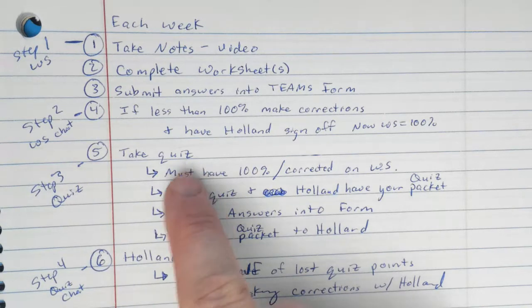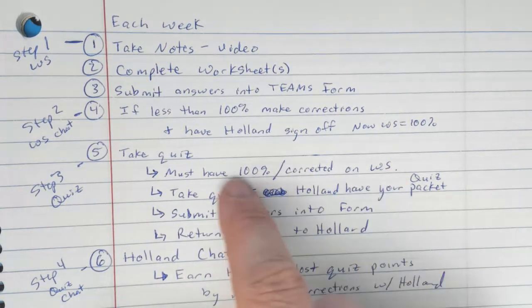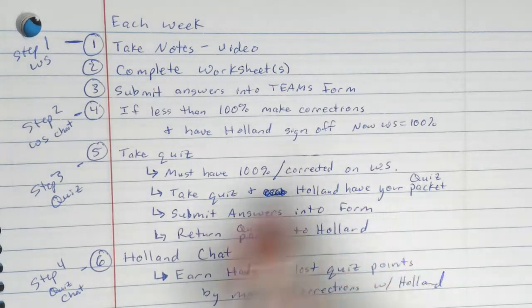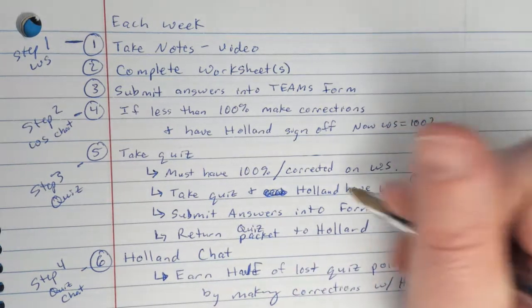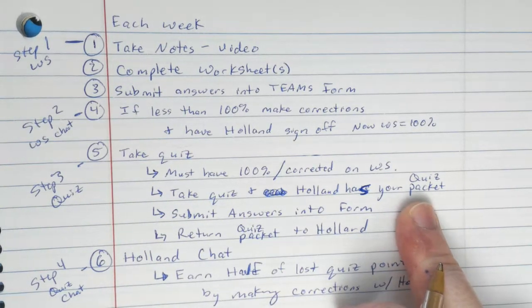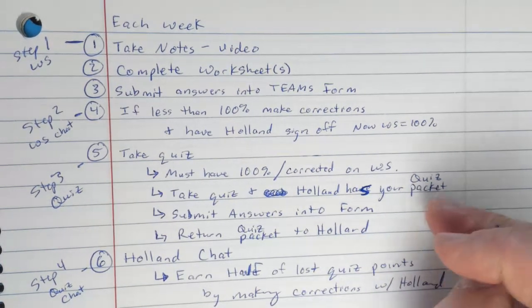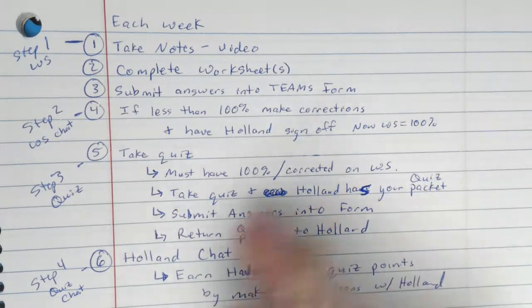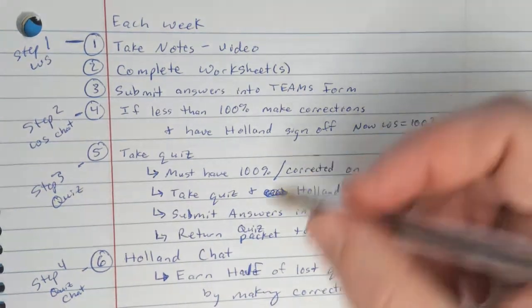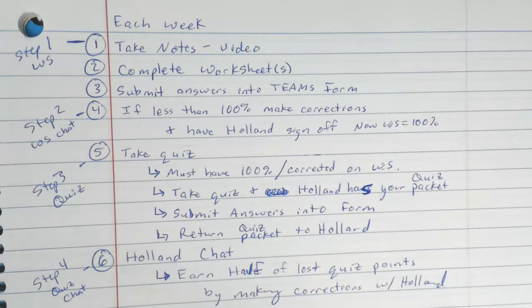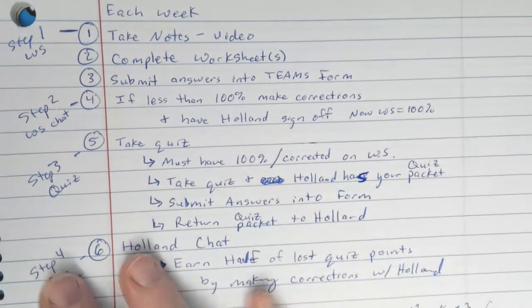So step three is the quiz. You're going to take the quiz. You must have a hundred percent on your worksheet. So either you earned a hundred percent the first time, or you corrected it with me. And now you have a hundred percent on the worksheet. Now you're allowed to take the quiz and I'm going to have your quiz packets. Holland has your quiz packet. You're going to give me your worksheet packet. I'm going to hold it hostage while you take your quiz. So it's going to feel like you're taking a test. You're going to use that quiz packet. Then after you finish the questions, you are going to open up the form and submit it. You're going to submit that into the Teams form. Then you're going to return your packet to me and I'm going to look at what grade you got. I might look at that grade at that very second, or I might look at it that afternoon and talk to you about it the next day. You're going to return that and I will give you back your packet.